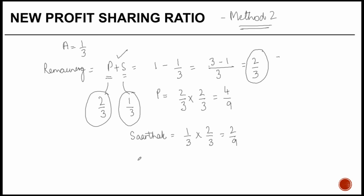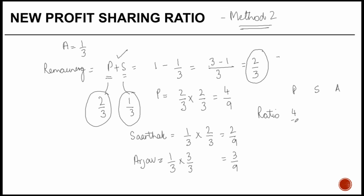Arjav is getting one upon three, or three upon nine. The new ratio between Puri, Sarthak, and Arjav is four by nine, two by nine, and three by nine — or four is to two is to three. Both methods give the same result.